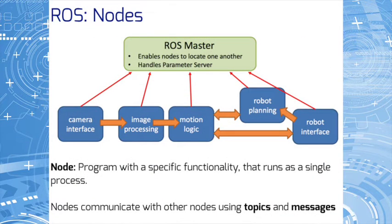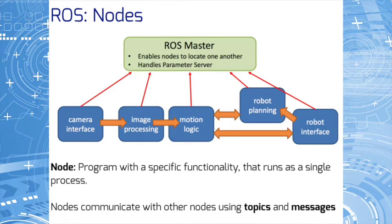A node is a ROS-enabled program. Every time you start ROS, a ROS master node is created in the system. The role of the master node is to enable individual ROS nodes to locate one another, and once these nodes have located each other, they communicate with each other. We have nodes for interfacing with our sensors, which could be a camera in this case. We have nodes to process the data we get from the sensors, nodes to perform our motion or path planning, and nodes to execute control commands.